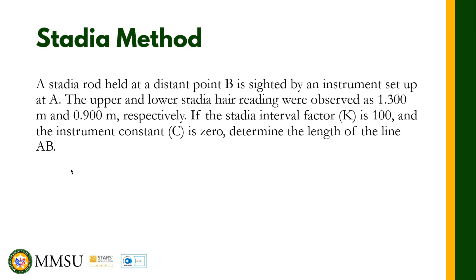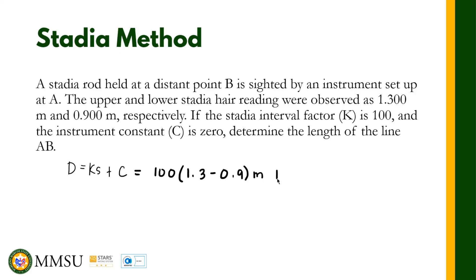We only have one formula: D equals kS plus C. Substituting the given values: K is 100, S is the difference between the upper and lower hair readings — that's 1.3 meters minus 0.9 meters — plus C, where the instrument constant is zero. Using our calculator, the distance D equals 40.0 meters.